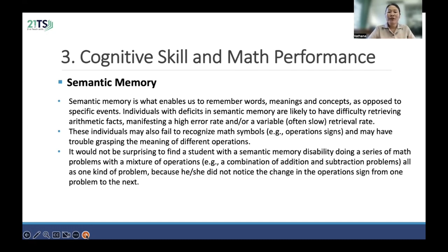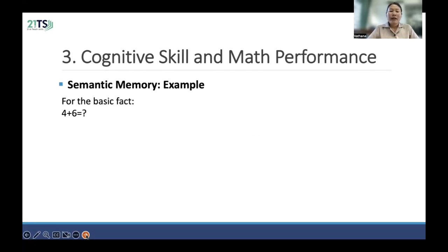Individuals may also have trouble recognizing math symbols. For example, operation signs, and they may have trouble recalling the meaning of different operations. It would not be surprising to find a student with a semantic memory disability doing a series of math problems using only one type of operation, such as a combination of addition and subtraction problems, because he or she did not notice the change in the operation sign from one problem to the next.